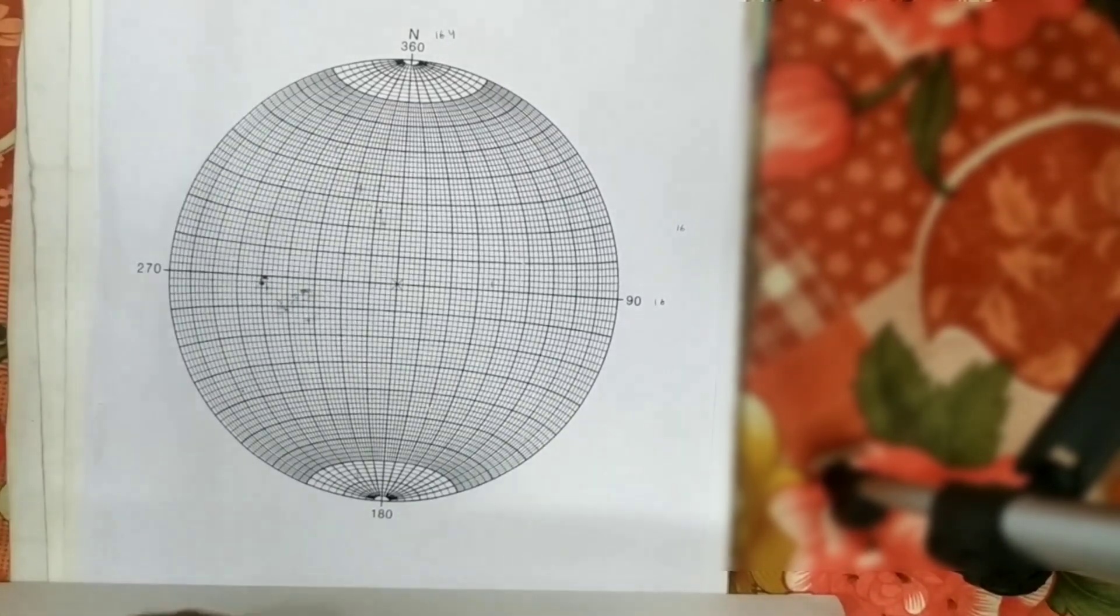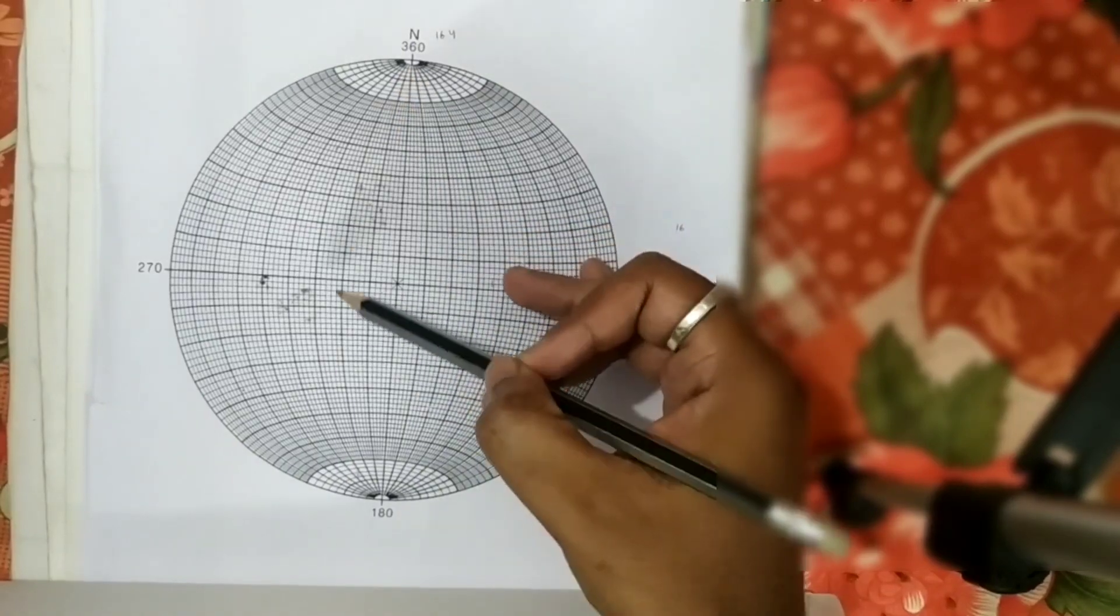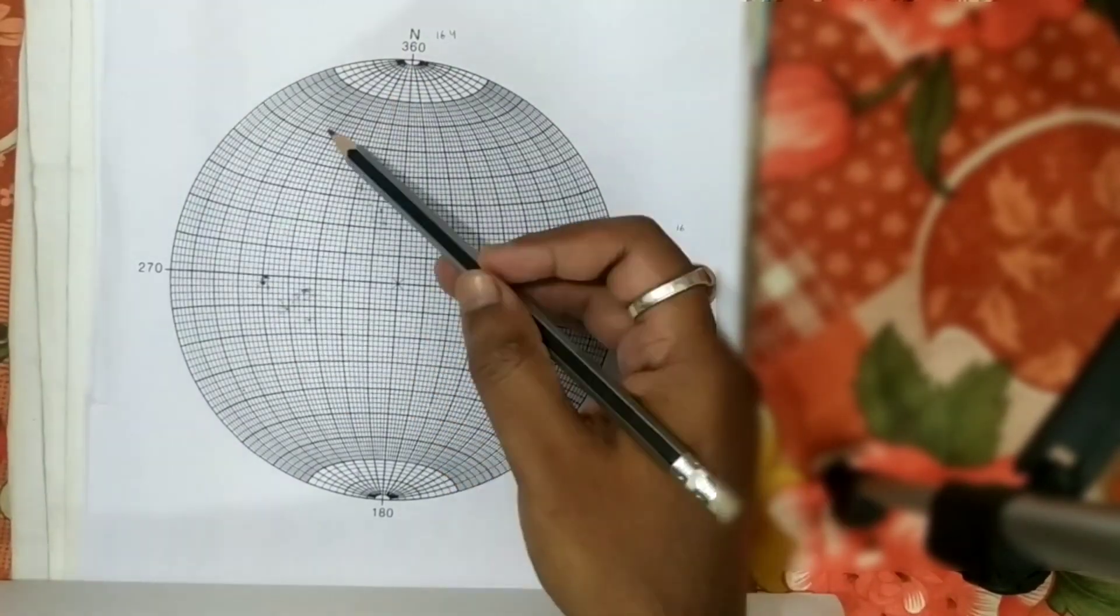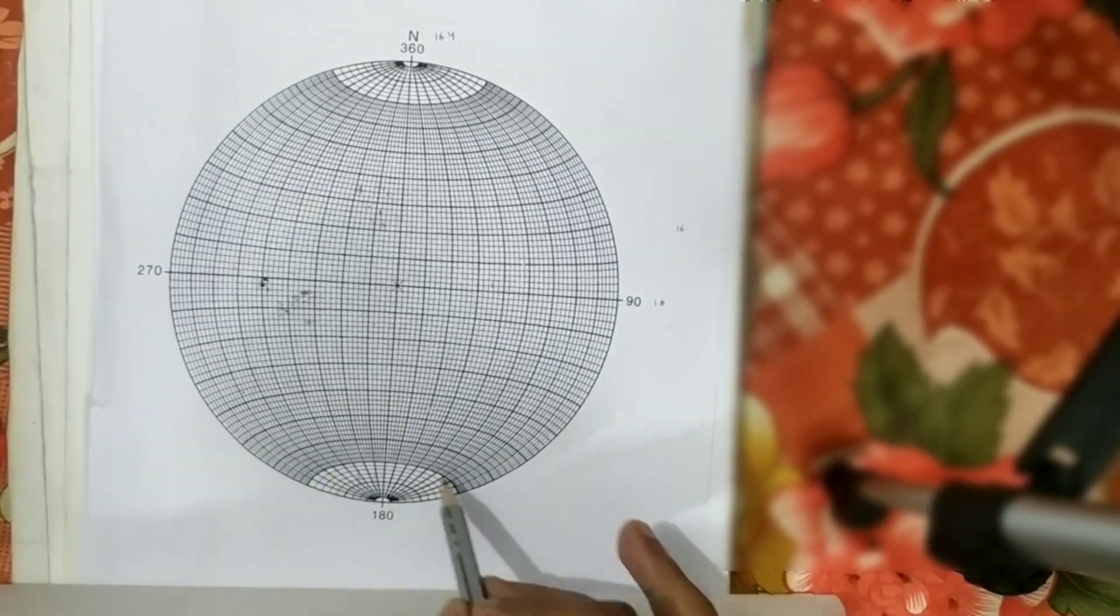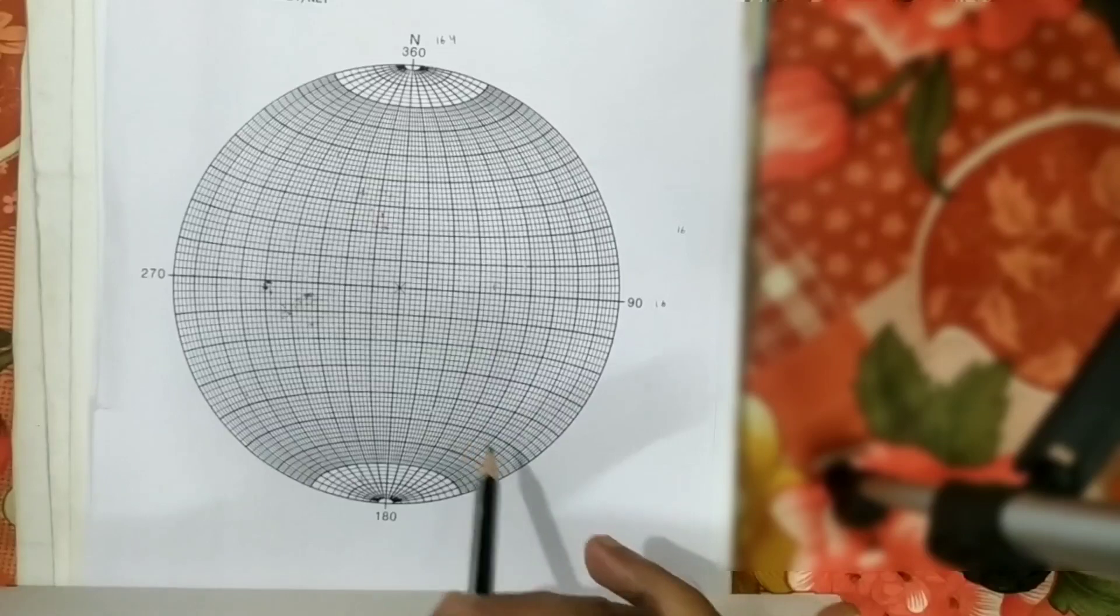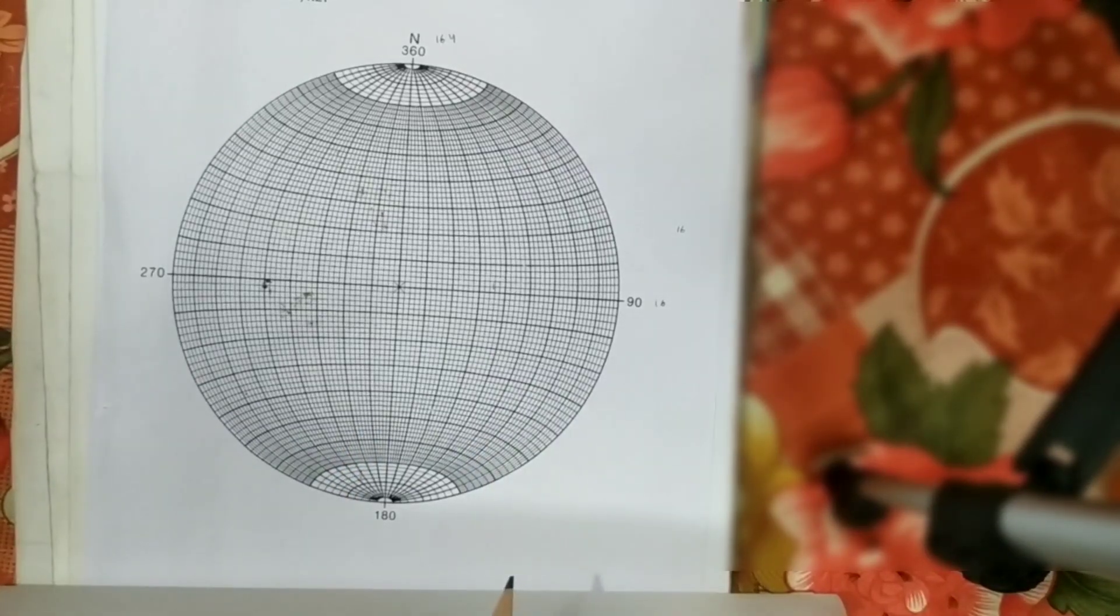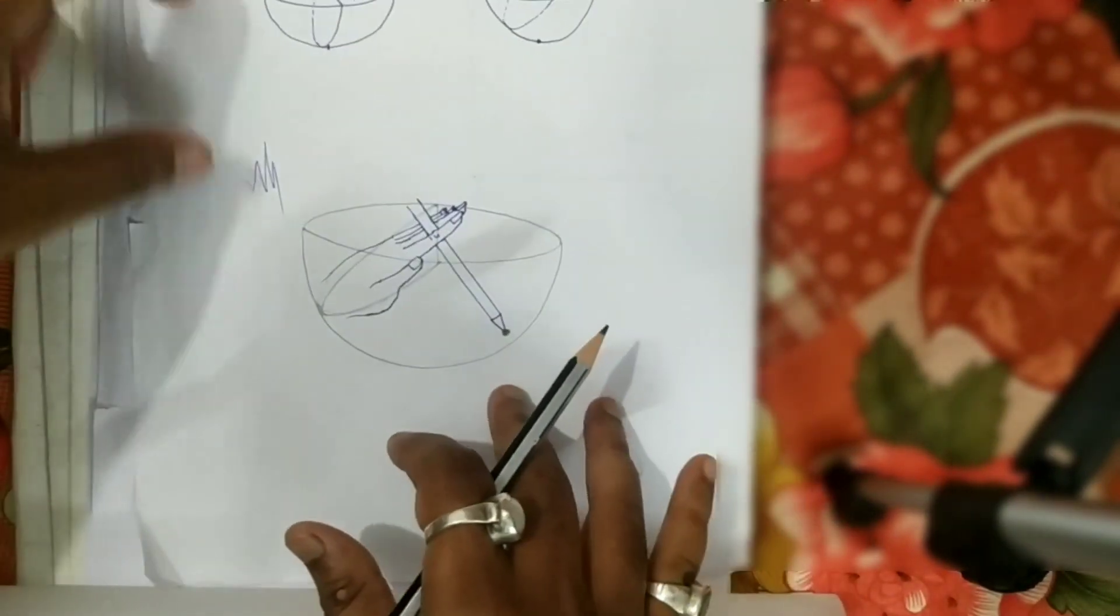This lesson is for those who have a clear idea about stereonet - that these longitudinal lines are called great circles and these latitudinal curvatures are called small circles. This is the basics of stereonet on a brief note.